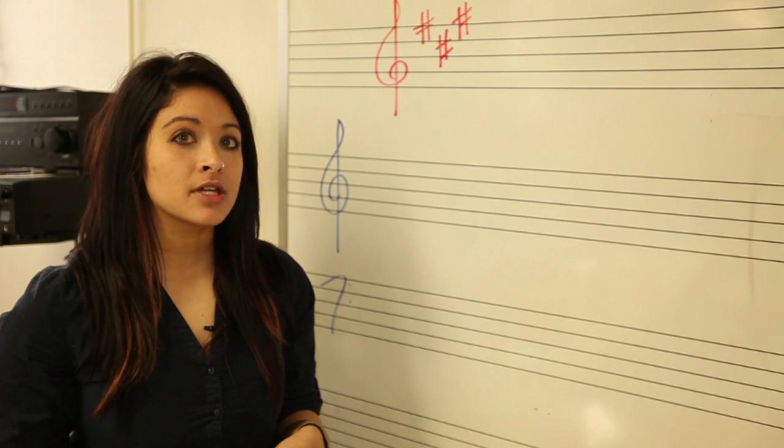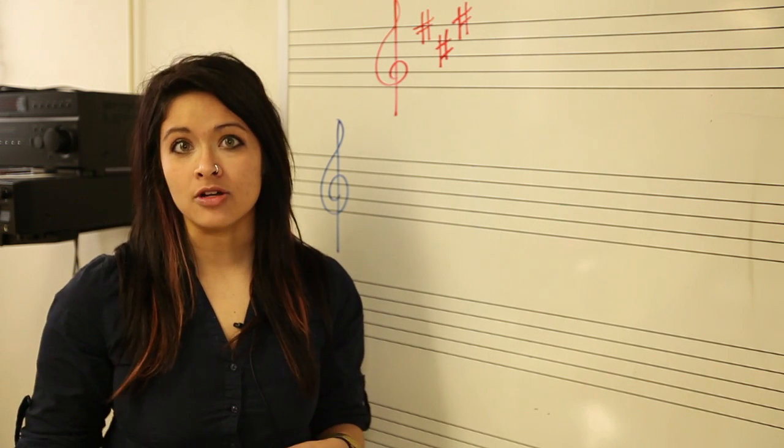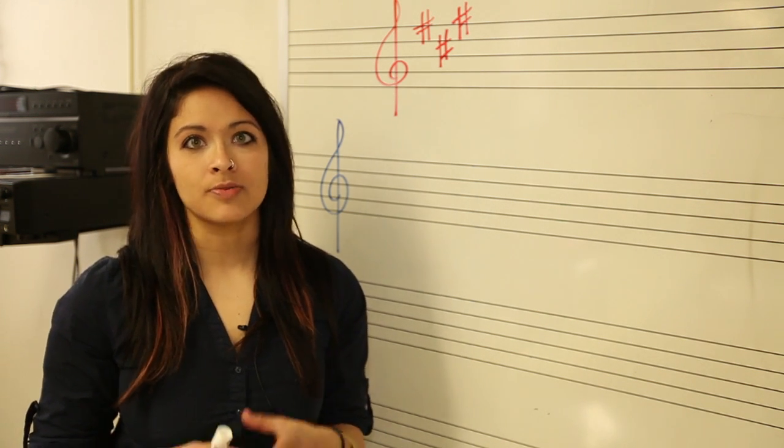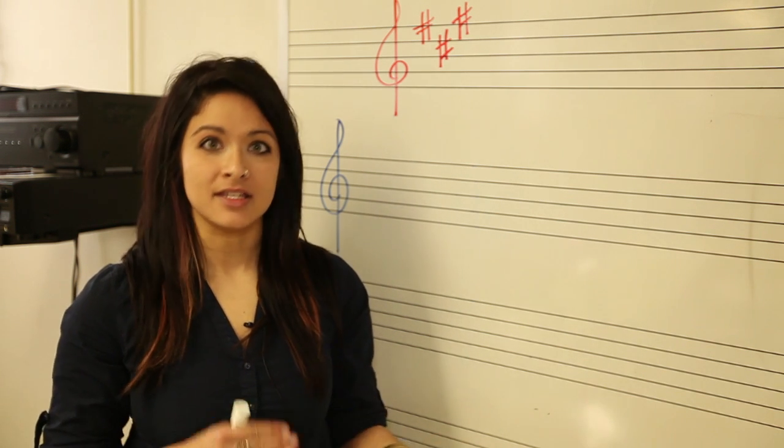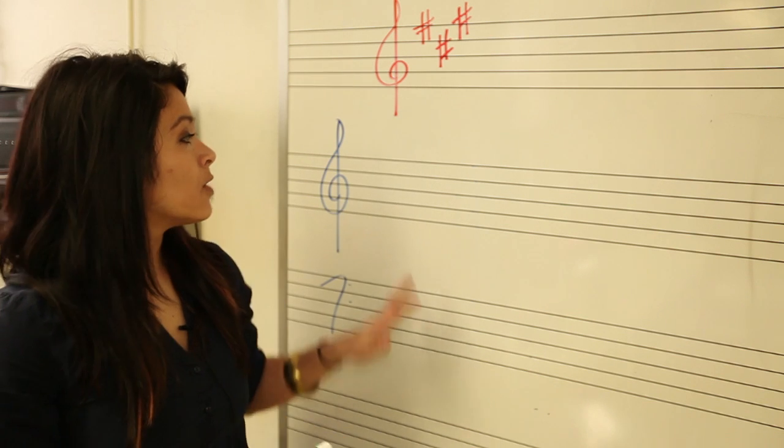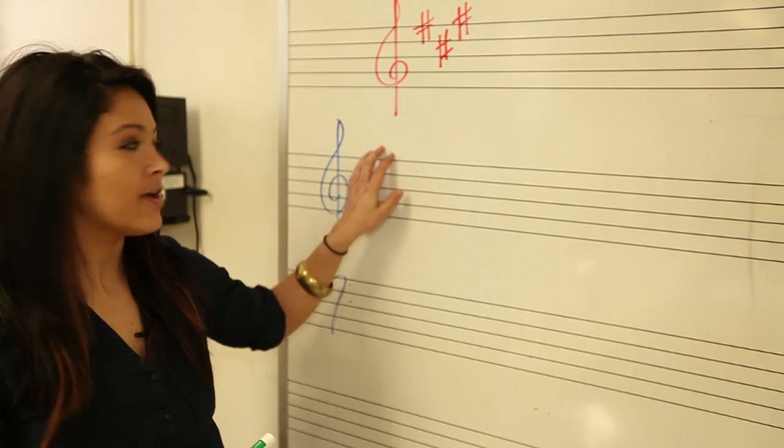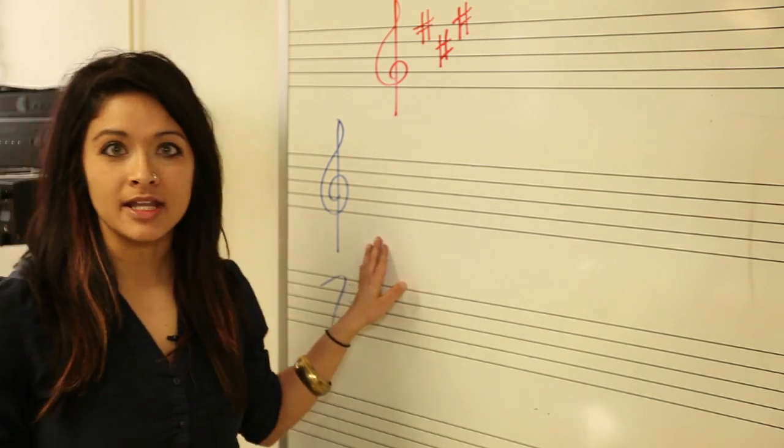When we consider musical keys, we always begin with C major, because C major has no sharps or flats. Sharps and flats indicate to us specific distances between those pitches. When we see C major, it will appear to have no sharps or flats at the beginning of each line.